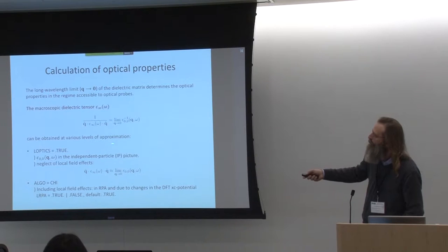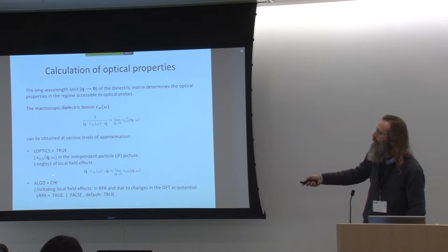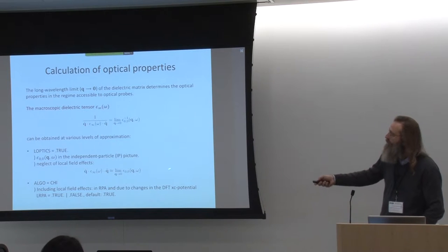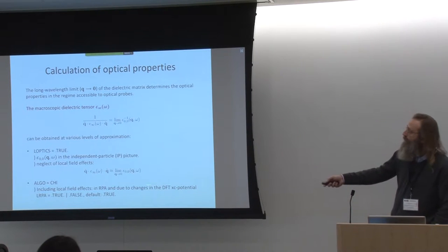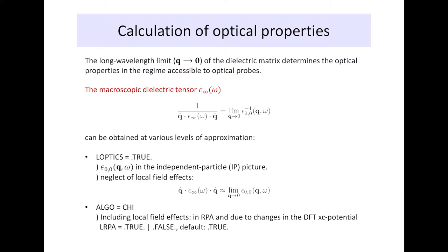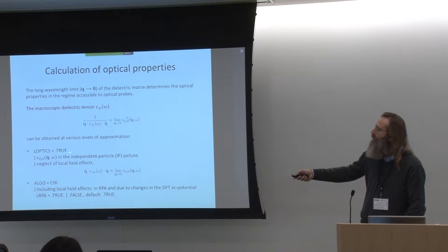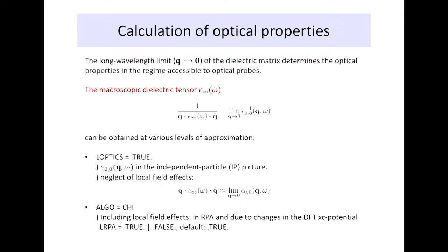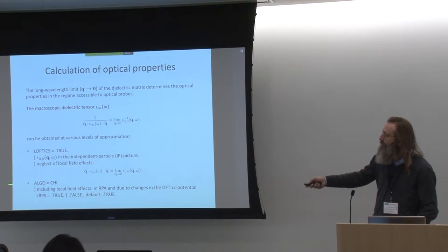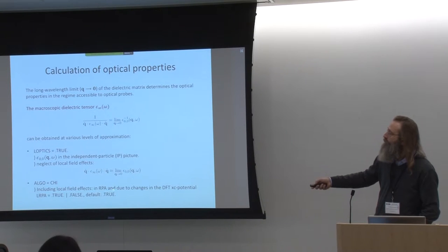We can do this at various levels of approximation: within the independent particle picture, including local field effects in the RPA, or beyond, adding changes in the DFT exchange-correlation potential. These are tags related to this: if you switch on LOPTICS=.TRUE. you get this particular quantity written out. If you want to go beyond, you can use ALGO=CHI, which uses much of the machinery that will be used for GW as well, so it's considerably more expensive, but you can get a better approximation to your dielectric screening.